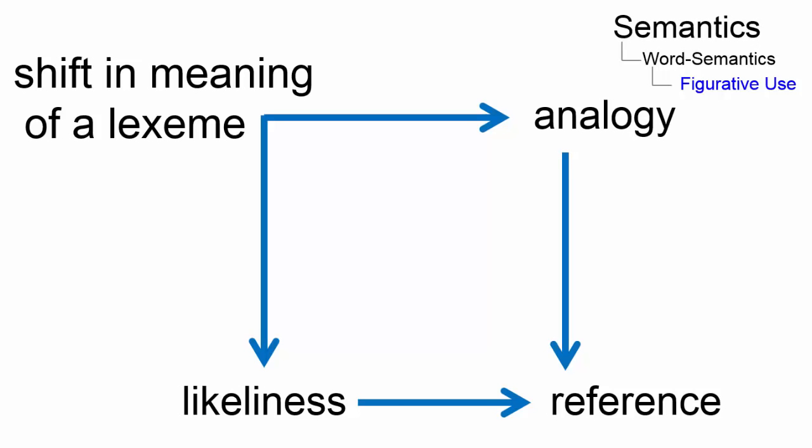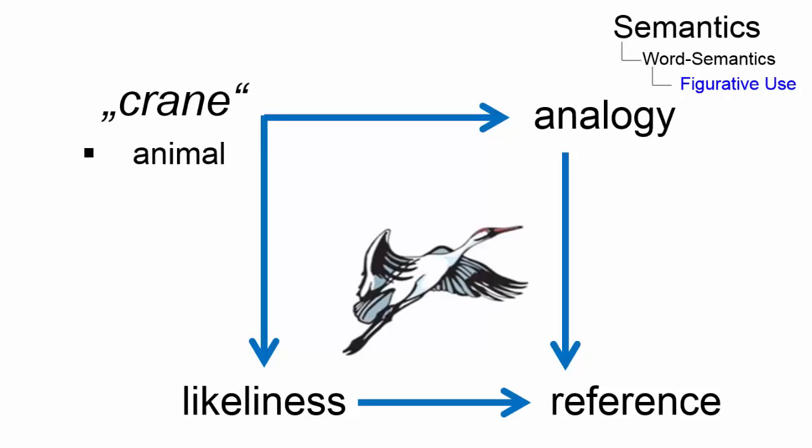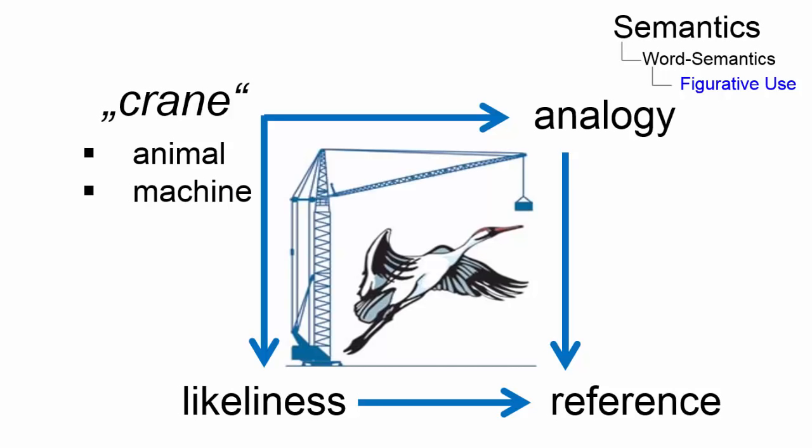For example, the word crane denotes a bird. This is what we consider its original biological meaning. However, we also use crane to refer to a machine that is used to lift heavy objects due to the similarities between the animal's long, thin neck and the machine's long, thin structure.